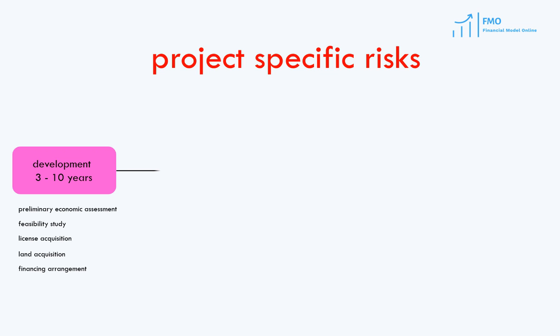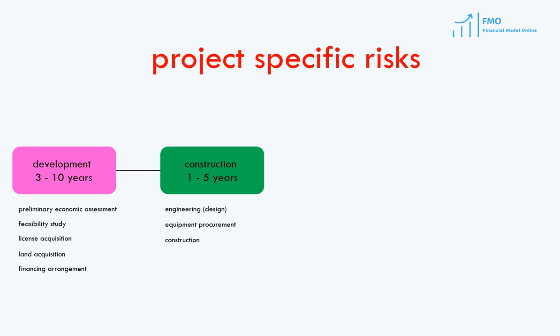Next is the stage when financing is closed and construction starts. At the construction stage, an EPC contractor designs the project, procures necessary equipment and materials, and builds the project according to the specifications set by the project sponsors. This stage lasts anywhere from one to five years, dependent on how complex the project is.